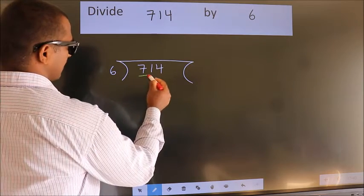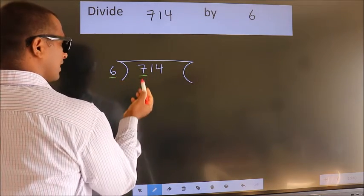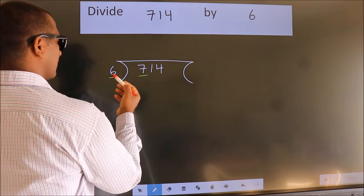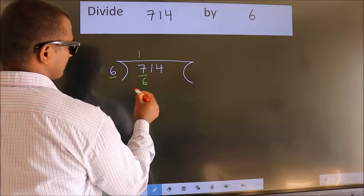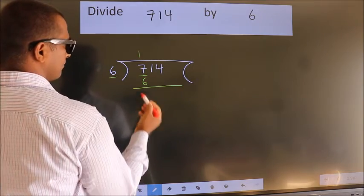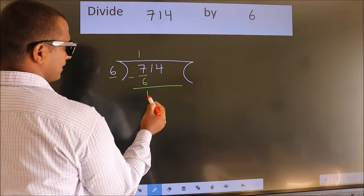Here we have 7. Here 6. A number close to 7 in 6 table is 6 once 6. Now we should subtract. We get 1.